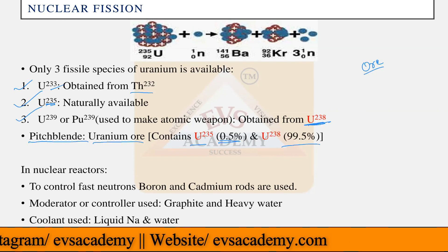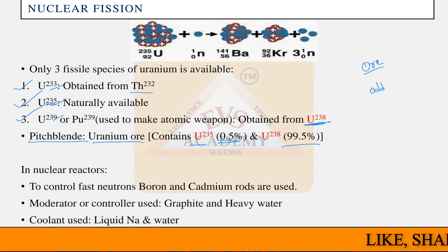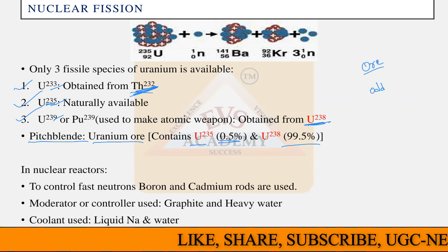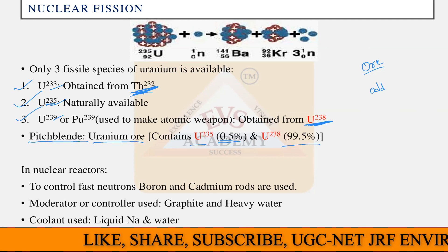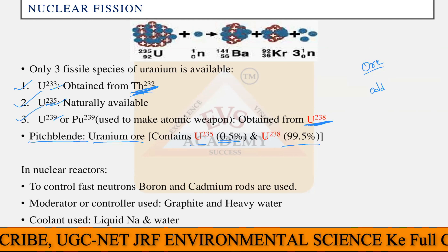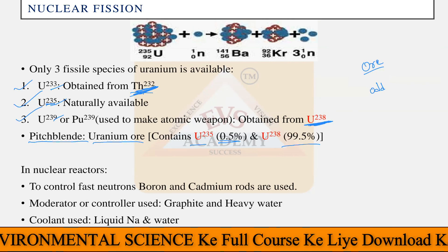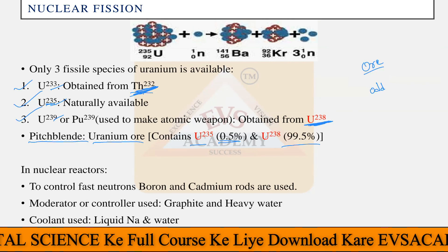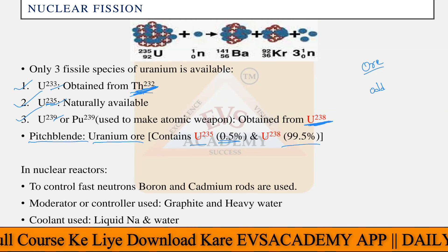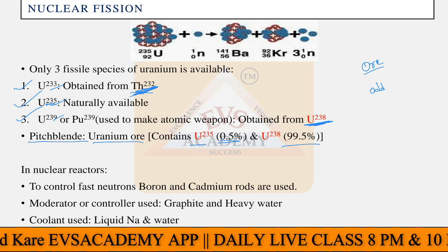A memory tip: the mass numbers end in 3, 5, and 9 — all odd numbers. The odd-numbered isotopes are radioactive, while even-numbered ones are not. So if asked in an examination which uranium isotopes are radioactive, the answer is uranium-233, uranium-235, and uranium-239. Note that no uranium-237 form is available.